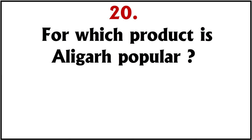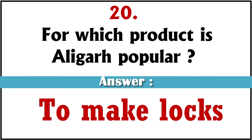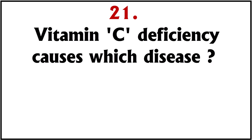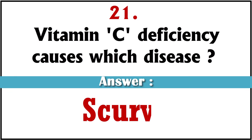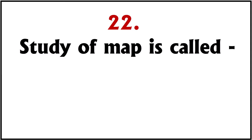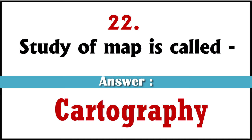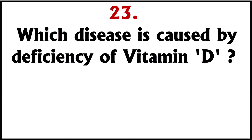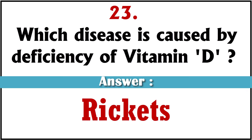For which product is Aligarh popular? To make locks. Vitamin C deficiency causes which disease? Scurvy. Study of maps is called? Cartography. Which disease is caused by deficiency of vitamin D? Rickets.